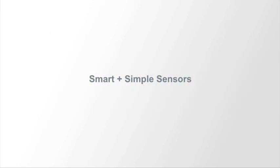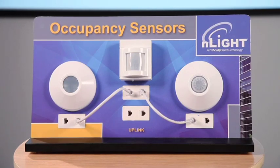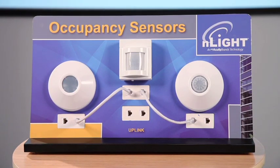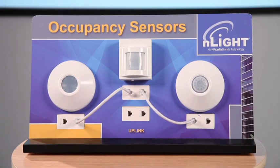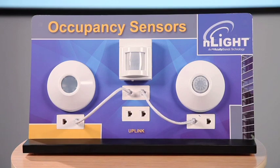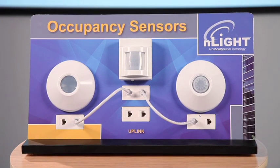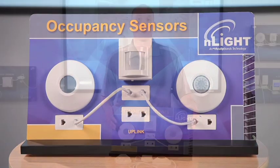The controls portion of your DLE demo includes three control boards, each board showing different products. The board you're looking at right now on the screen contains the occupancy sensors and dimming photocells.